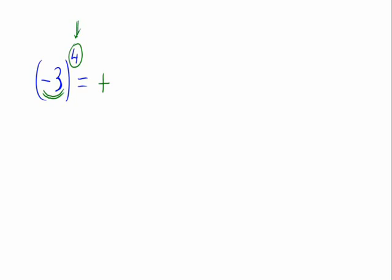We could have done minus 3 times minus 3 times minus 3 times minus 3 to check this. But now, to make it easier, let's write 3 raised to the fourth. And this is equal to 3 times 3 times 3 times 3.